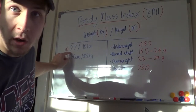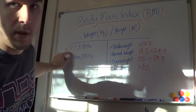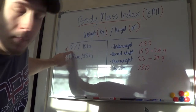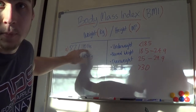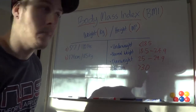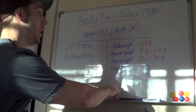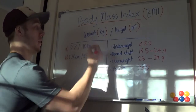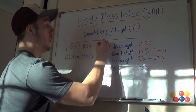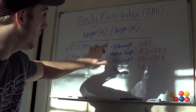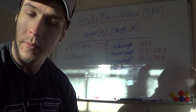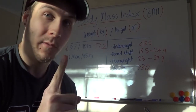I'm going to do one example in metric and one in standard measurement. Person A: an individual who is five foot seven and weighs 110 pounds — have a guess at which category they'd be in. Their BMI comes out to 17.2, so according to this chart they are underweight, which in most cases would be true.